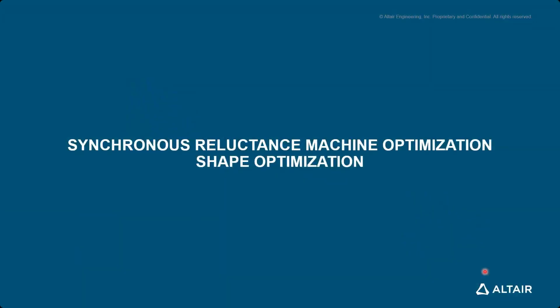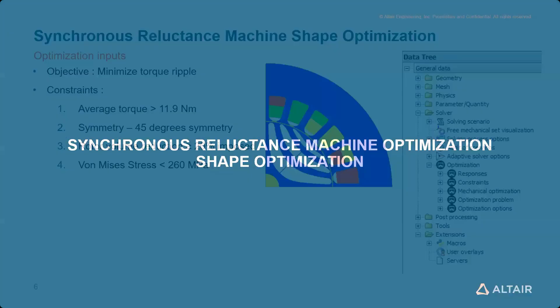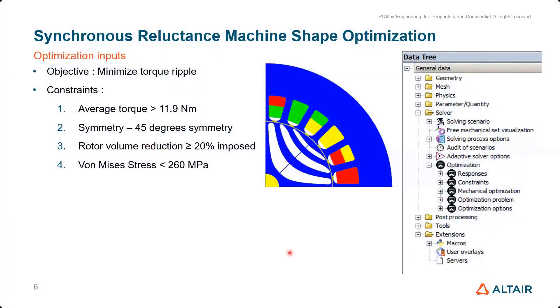Moving on to shape optimization, an example of a synchronous reluctance machine is used to show the workflow. You can see the optimization options under your data tree once everything is defined. Under Advanced mode, under Solve, you will see the tree for optimization, which you use to completely define your optimization.